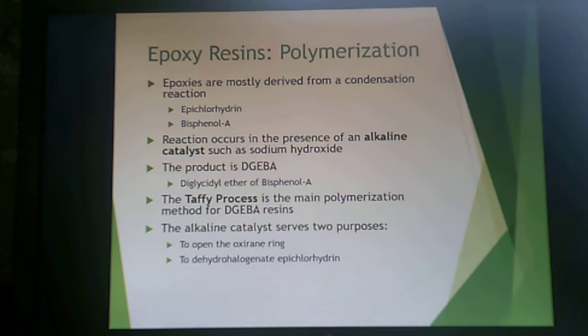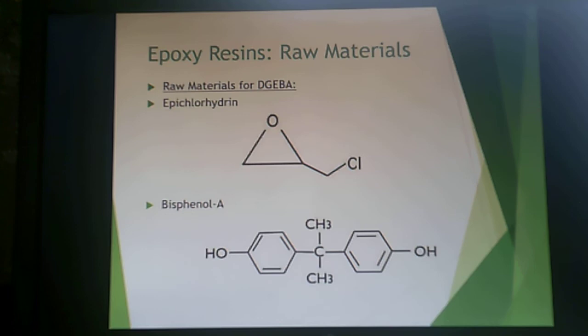Epoxies are mostly derived from a condensation reaction between epichlorohydrin and bisphenol A in the presence of an alkaline catalyst like sodium hydroxide. The resulting product is DGEBA — diglycidyl ether of bisphenol A — produced via the taffy process, which is the main polymerization method for DGEBA resins. The alkaline catalyst does two things: it opens the oxirane ring and dehydrohalogenates the epichlorohydrin.